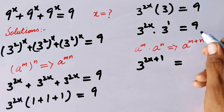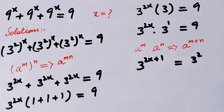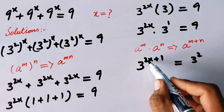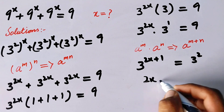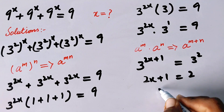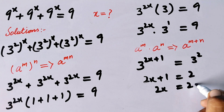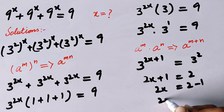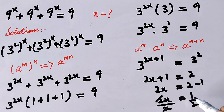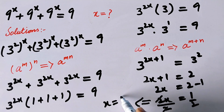On the right side, 9 is the square of 3, so it can be written as 3². Now the bases are the same on both sides, so we can compare the exponents: 2x + 1 = 2. Moving 1 to the right side gives 2x = 2 − 1 = 1. Dividing both sides by 2, x = 1/2. That is our final answer.